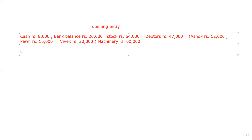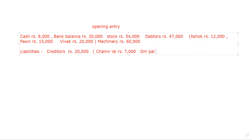Now talking about the liabilities — the creditors are: Chamanlal Rs. 7,000 and Kompal Rs. 13,000. Capital is Rs. 2,00,000. So the values of assets and liabilities are given to us at the beginning of the year.